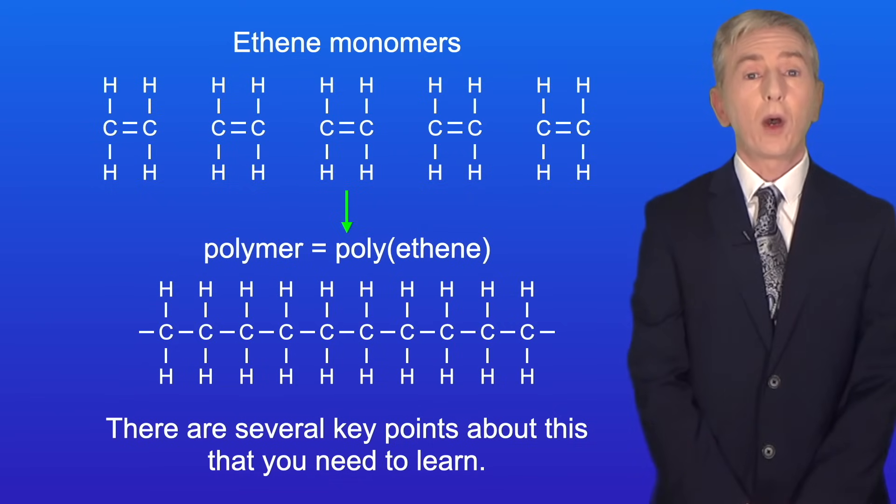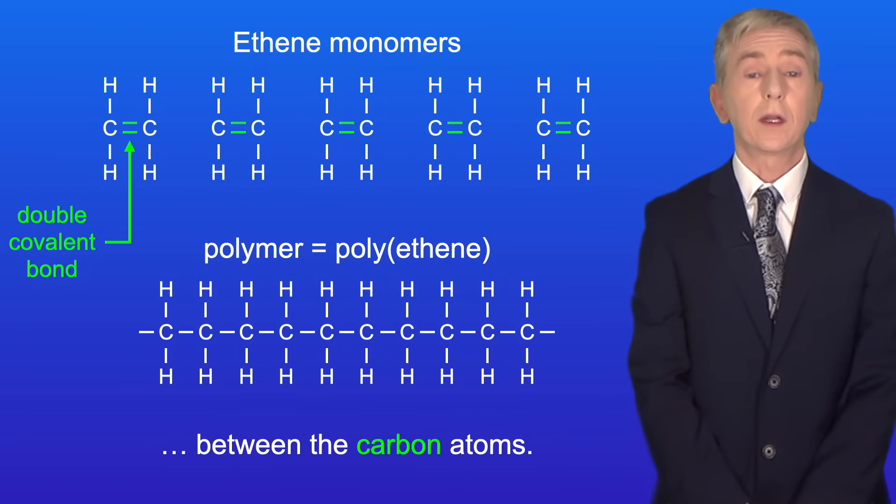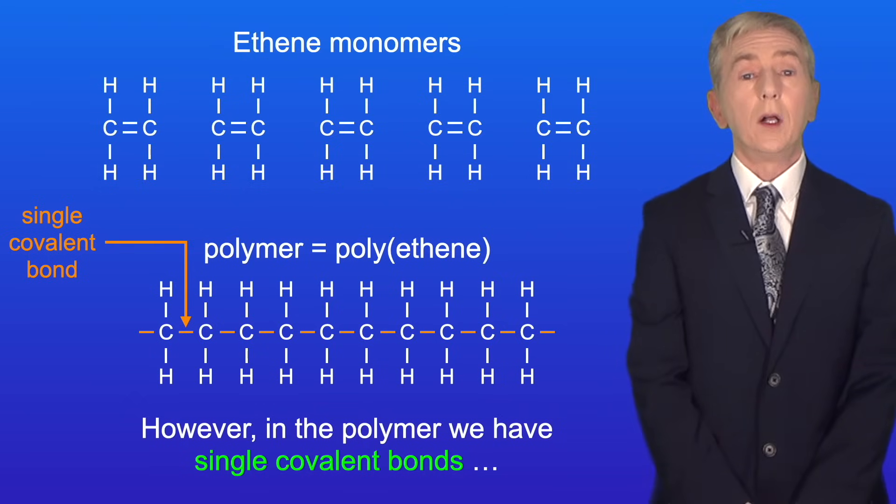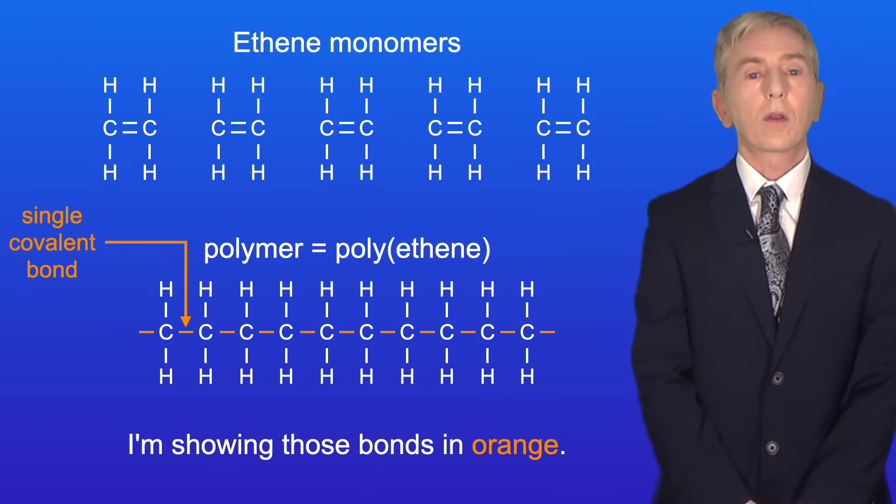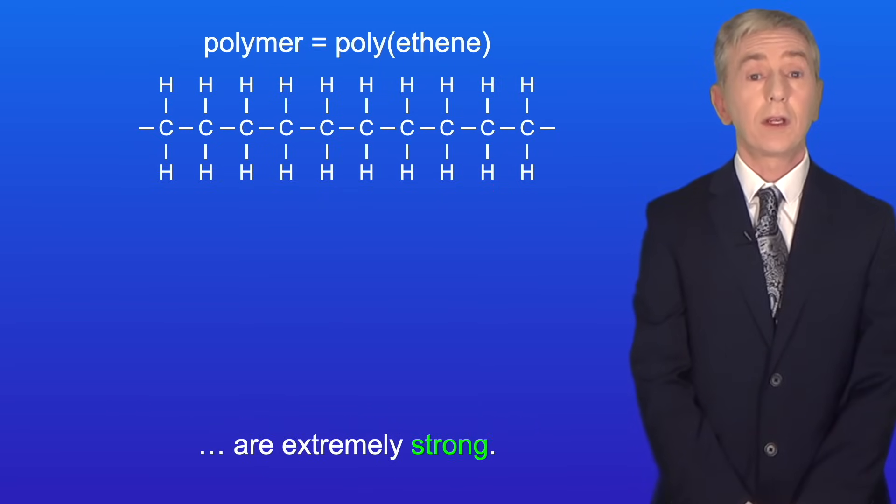Now there are several key points about this that you need to learn. Firstly the alkene monomer has a double covalent bond between the carbon atoms and I'm showing those bonds in green. However in the polymer we have single covalent bonds between the carbon atoms and I'm showing those bonds in orange. You need to remember that all of the covalent bonds in polymers are extremely strong.